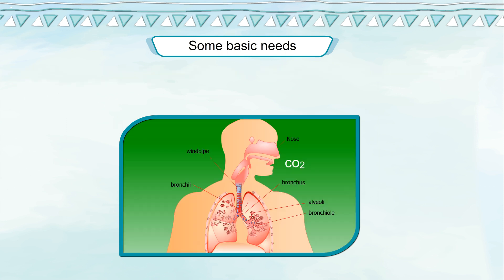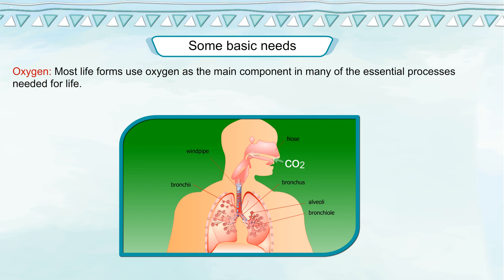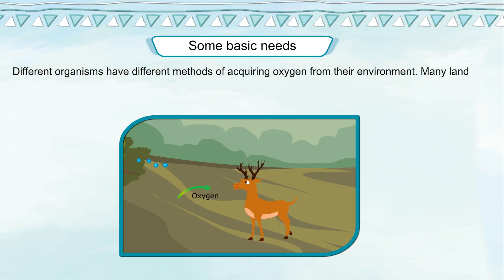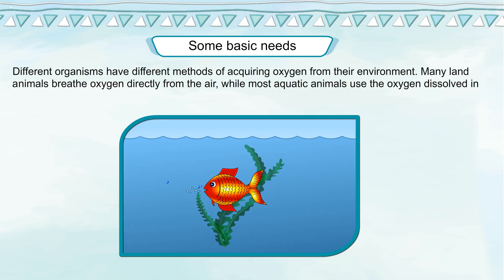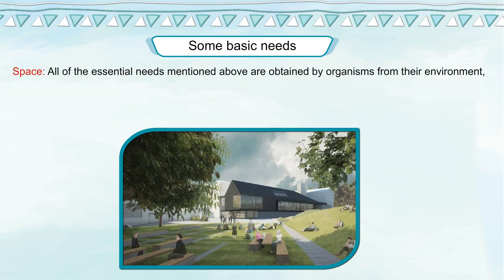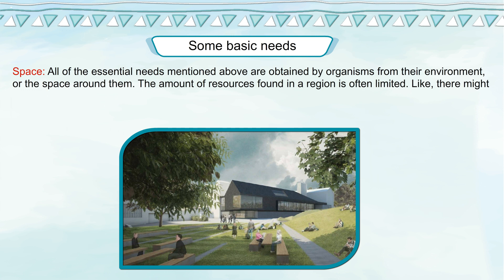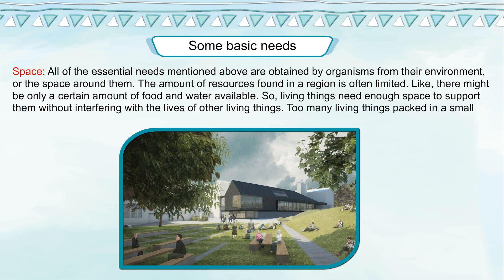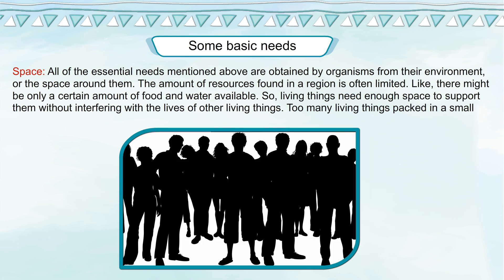Plants use water to grow and to make and transport food. Oxygen: Most life forms use oxygen as the main component in many of the essential processes needed for life. Different organisms have different methods of acquiring oxygen from their environment. Many land animals breathe oxygen directly from the air, while most aquatic animals use the oxygen dissolved in water to survive. Space: All essential needs are obtained by organisms from their environment. The amount of resources in a region is often limited, so living things need enough space to support them without interfering with the lives of other living things. Too many living things packed in a small space would lead to a major scarcity of resources.